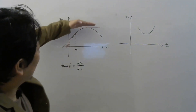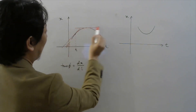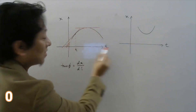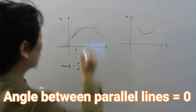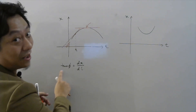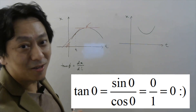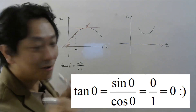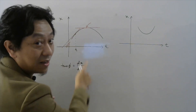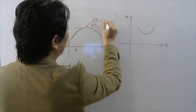Since the tangent is parallel to the time axis, the angle made by the line with the time axis is 0. Since this is parallel to this line, angle will be 0 between parallel lines. So at that point, since phi is 0, tan 0 is 0 — because tan 0 is sin 0 by cos 0, which is 0 by 1, which is 0. Since tan 0 is 0, at this point dx by dt will be 0.